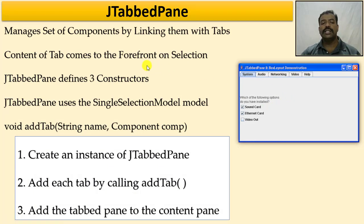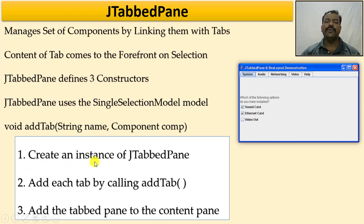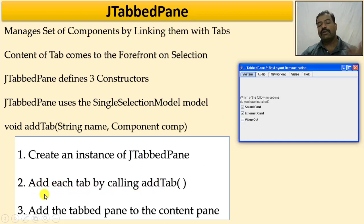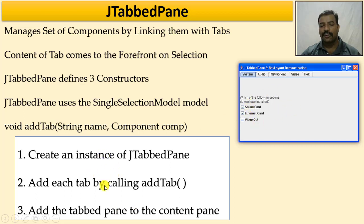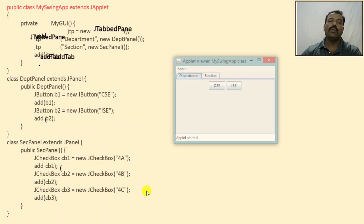Whenever I want to use this JTabbedPane, I follow these steps: first, create an instance of the JTabbedPane; second, create instances and add each tab by calling addTab with the components I want; and third, add the tab pane to the content pane. So: create the tab, add the components for the tab, and add the tab to the pane.